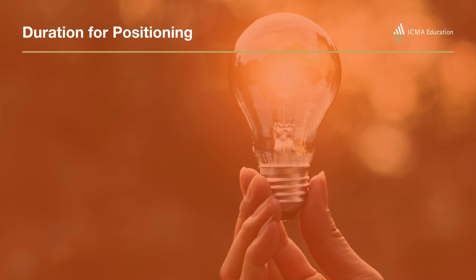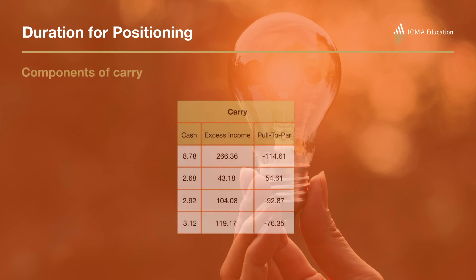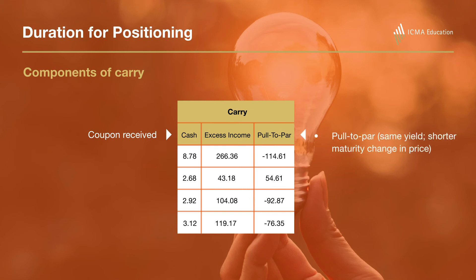The key is that this is over a whole year, so you have to think about the carry being earned. You can think about the components of carry: the coupon being received — split into cash and excess income in this system — and the pull-to-par effects from rolling down the curve and from the price heading towards par. We go into detail on these different components in the course.